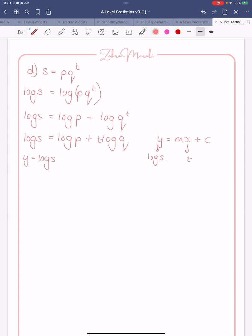We know that y is log s, so we've got y equals log s. We know that x is the same as t. So x equals t. In front of the t here we have log q, so we're going to say our m is equal to log q, and we're going to say our c must therefore be log p. And that's your connection.